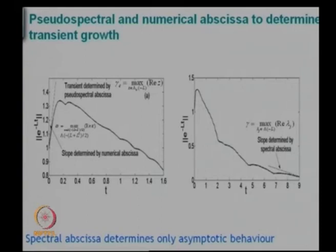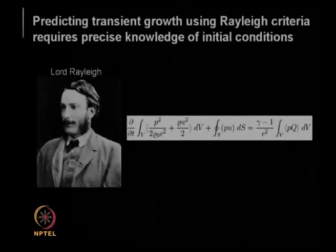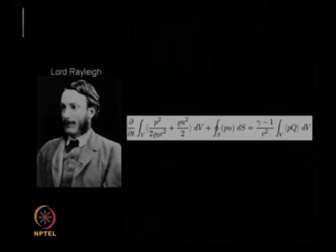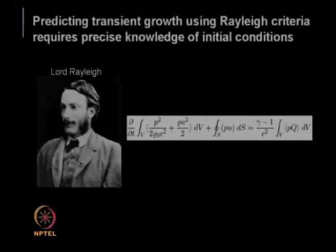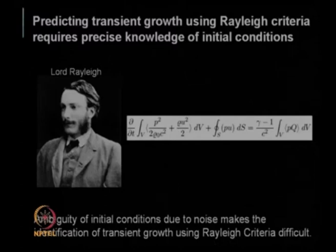That is the energy criterion in the presence of heat release given by Lord Rayleigh. Predicting transient growth using the Rayleigh criterion requires precise knowledge of initial conditions. The ambiguity of initial conditions due to noise — because you cannot precisely know the initial conditions — makes the identification of transient growth using the Rayleigh criterion very difficult.